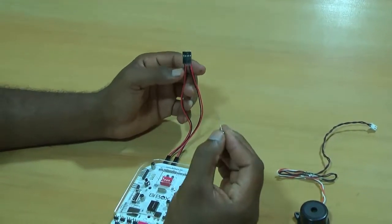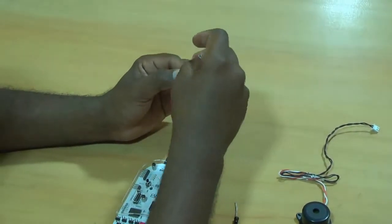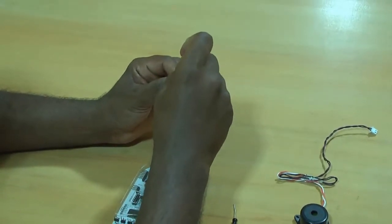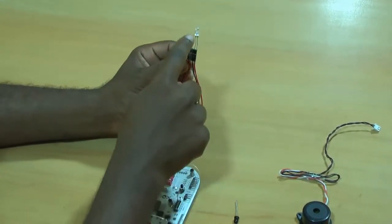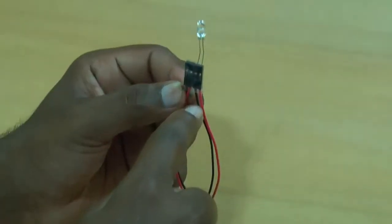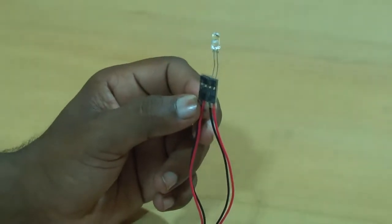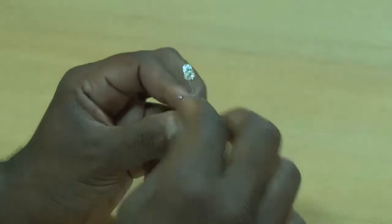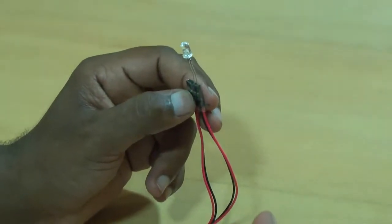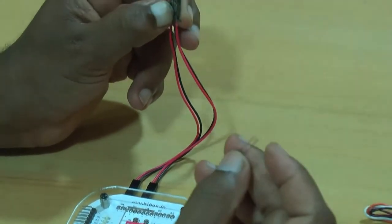So the transmitter has to go something like this. That is, the bigger leg should go to red. The smaller leg should go to black. So once this is done, you need to connect your receiver. So make sure, while you connect your receiver, you need to connect your receiver in reverse direction.